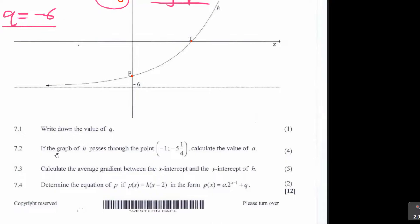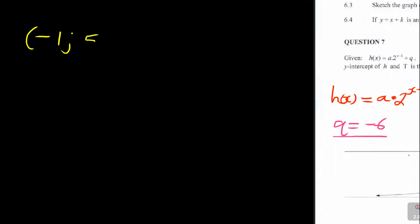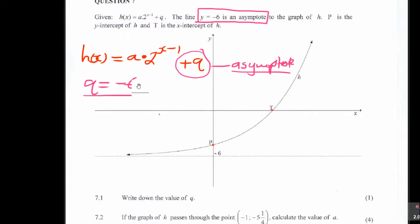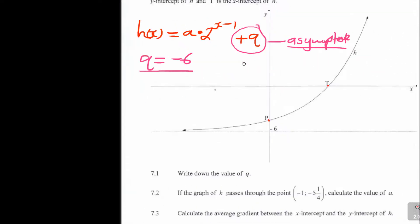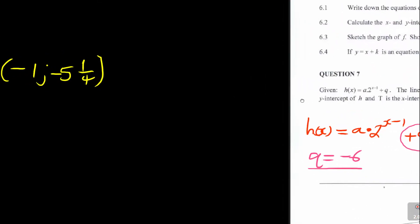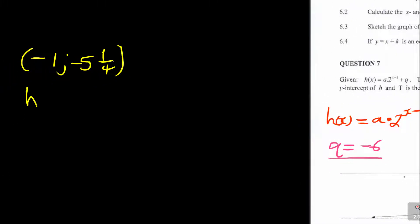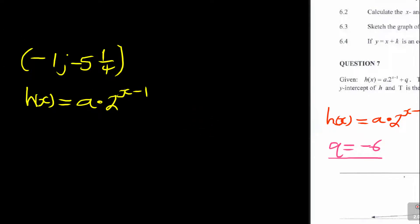Then they say: if the graph of h passes through the point negative 1, negative 5 and a quarter, calculate the value of a — 4 marks. So you're given the point negative 1 and negative 5 and 1 over 4. Remember we are given h of x equal to a times 2 to the exponent x minus 1 plus q. They gave us that point, but I know my q is negative 6, so we substitute minus 6.